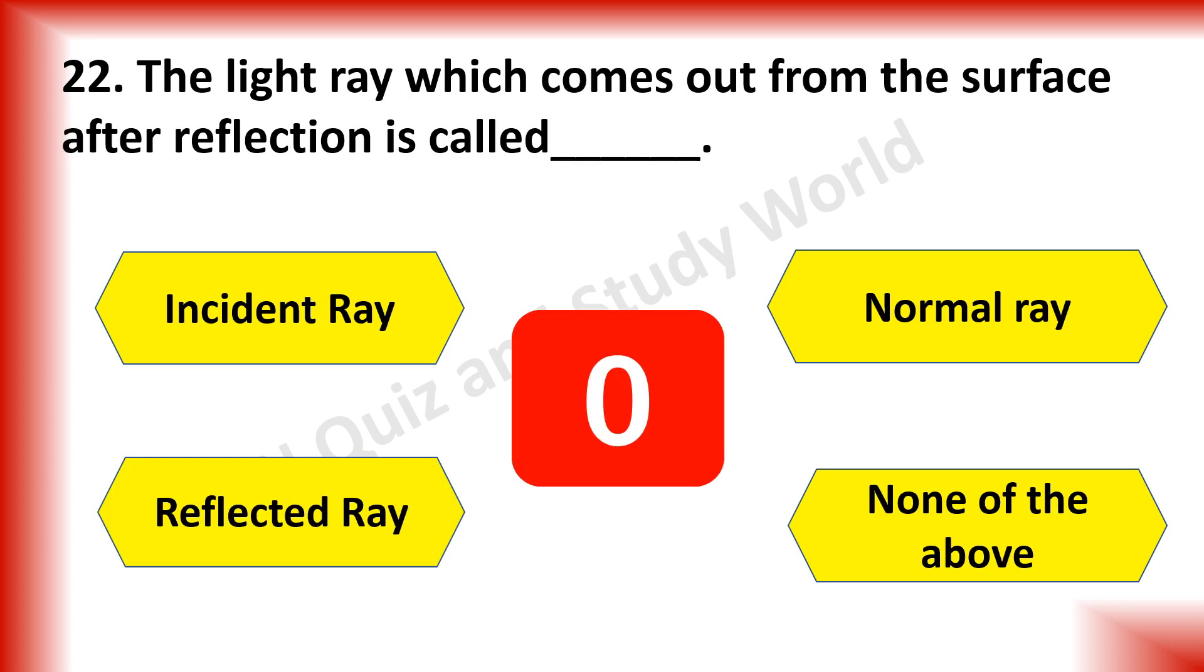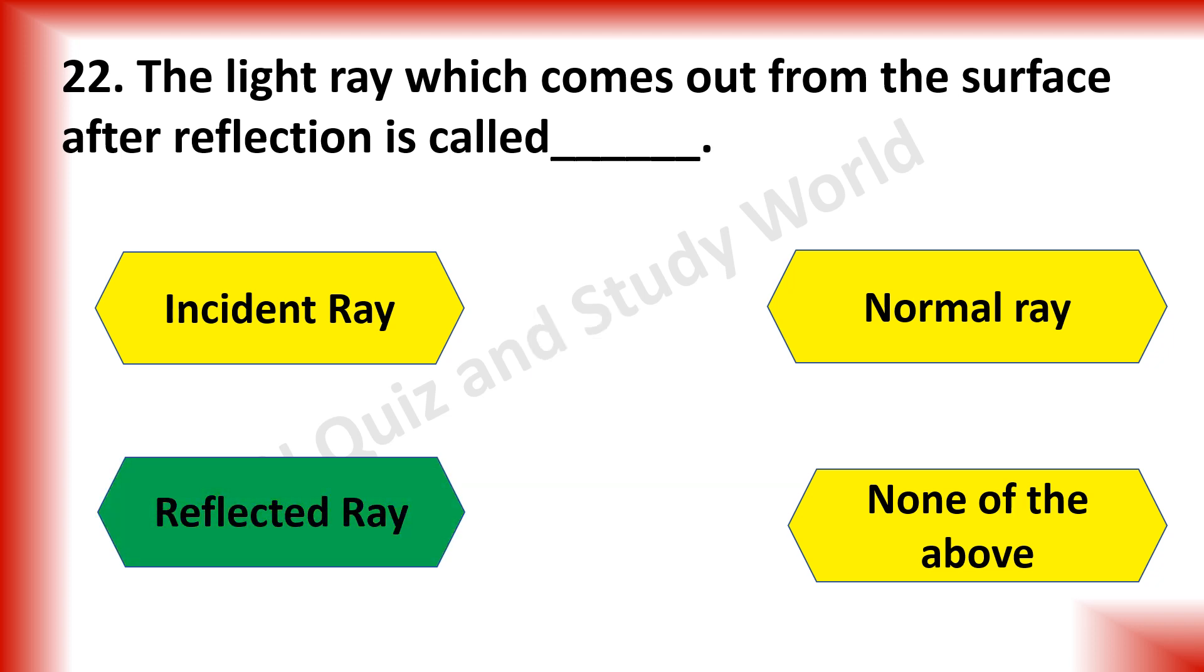What is the light ray which comes out from the surface after reflection called as? Is it an instant ray, reflected ray, normal ray or none of the above? The answer is reflected ray.